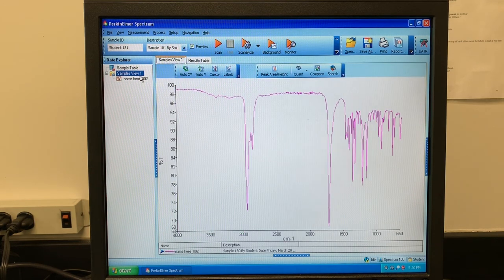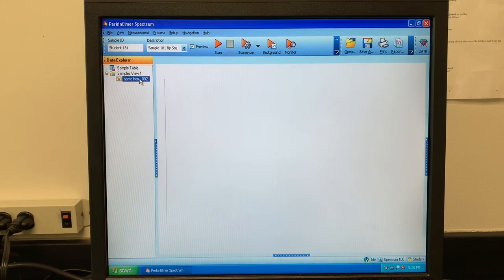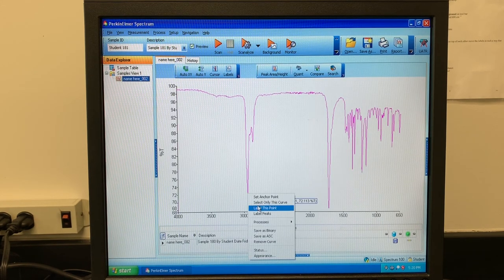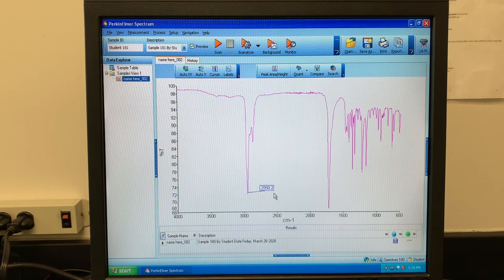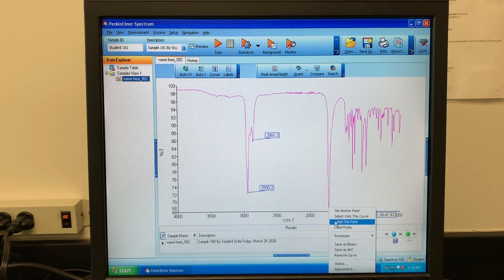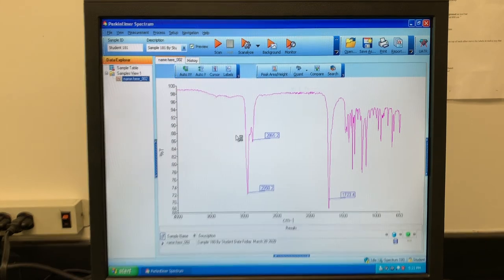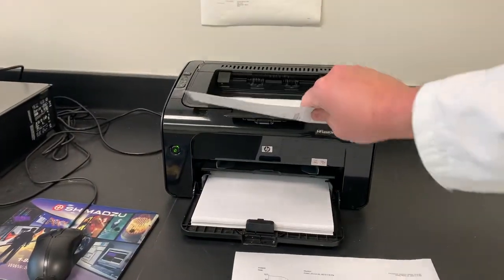Then at the top left side of the screen, under data explorer, you should see a file with your name on it. Click on it to open your spectrum. To label the important major peaks, hover over the peak you want to label, right click, and press label this point. Then press ok, and you should have a label that you can move to where you need it. Repeat as necessary. Then click file, print, and you are done.